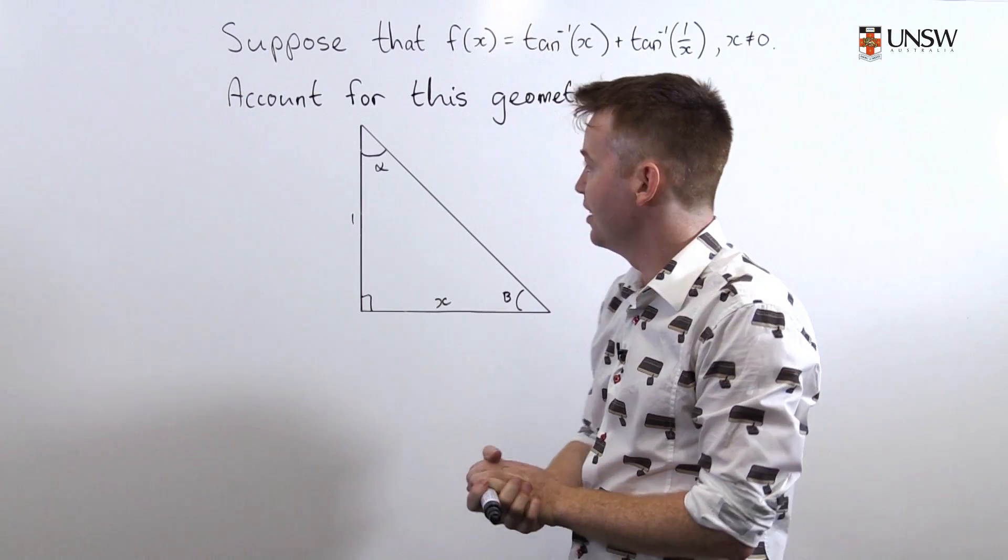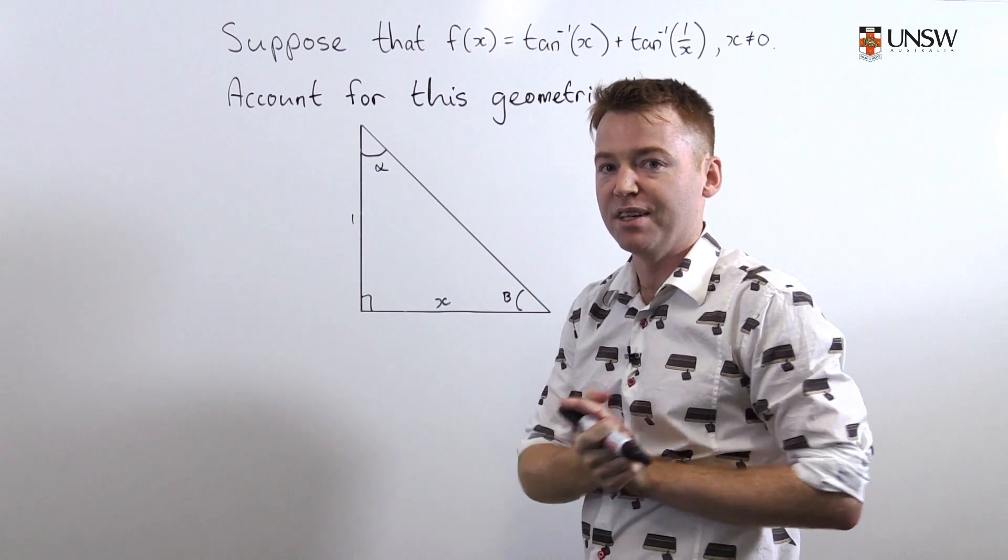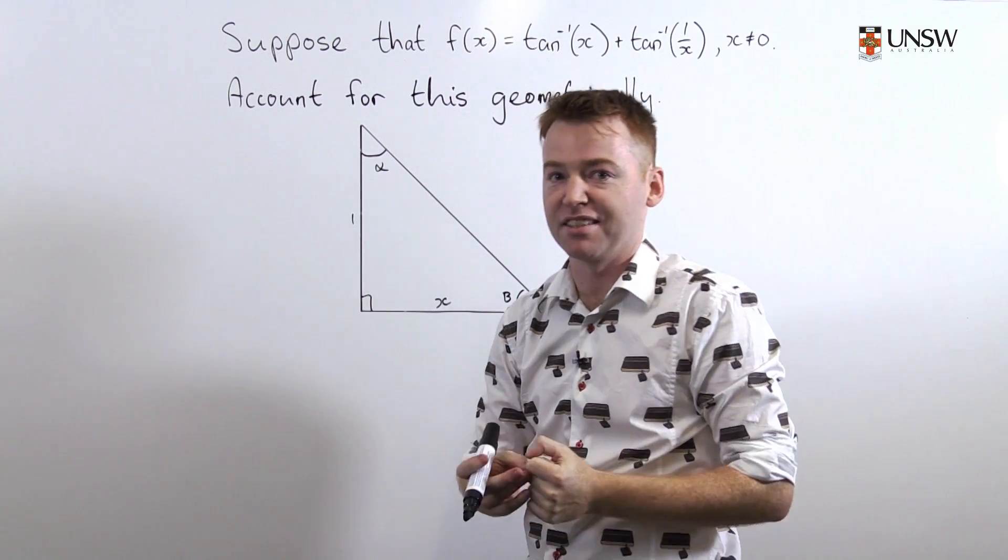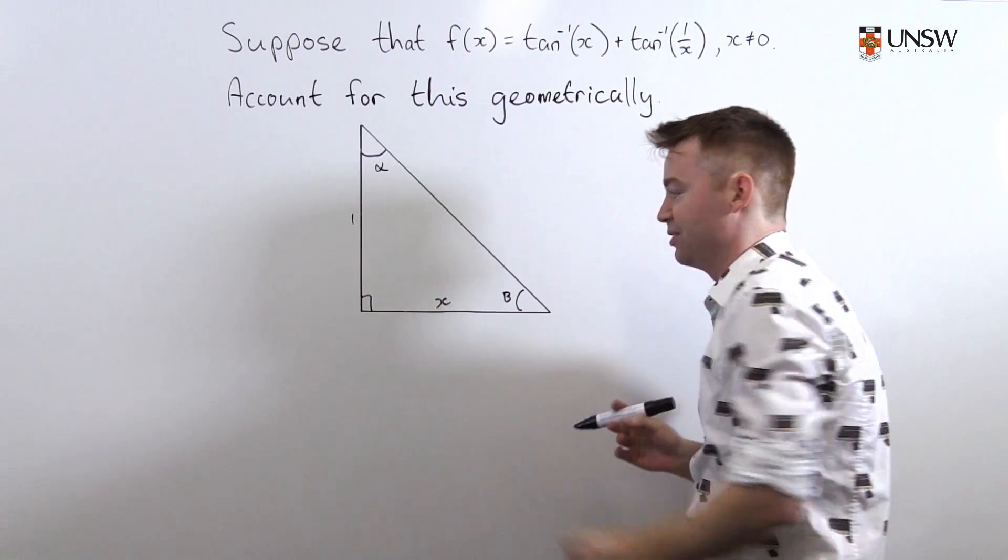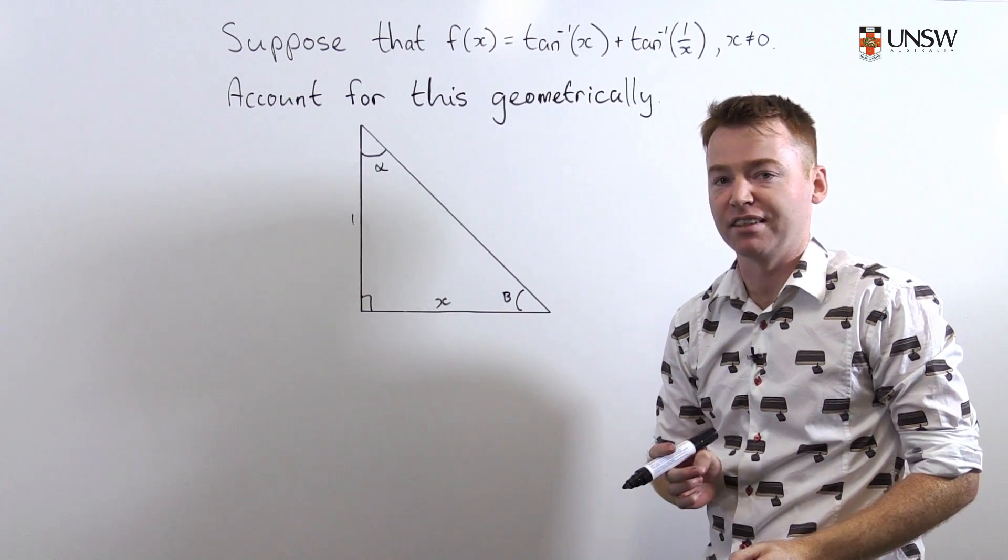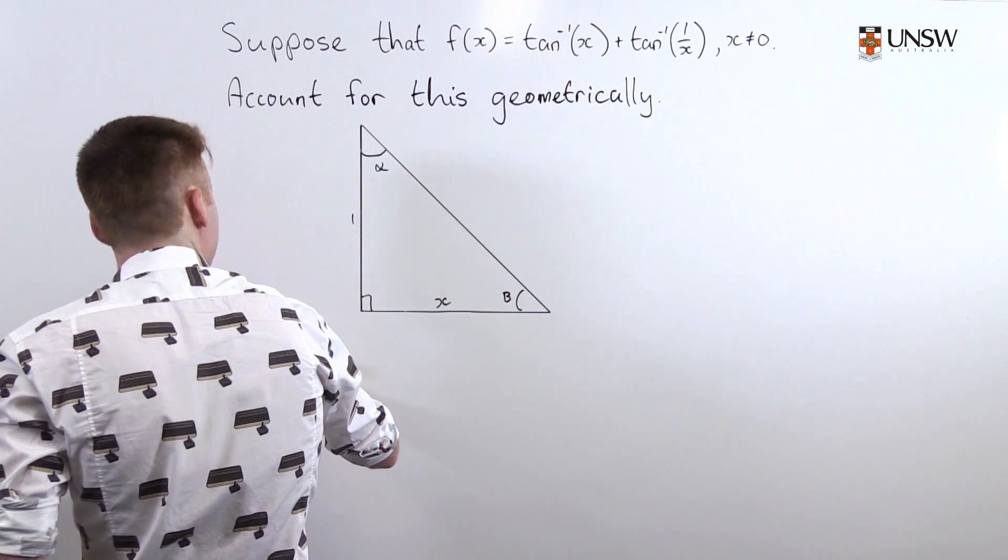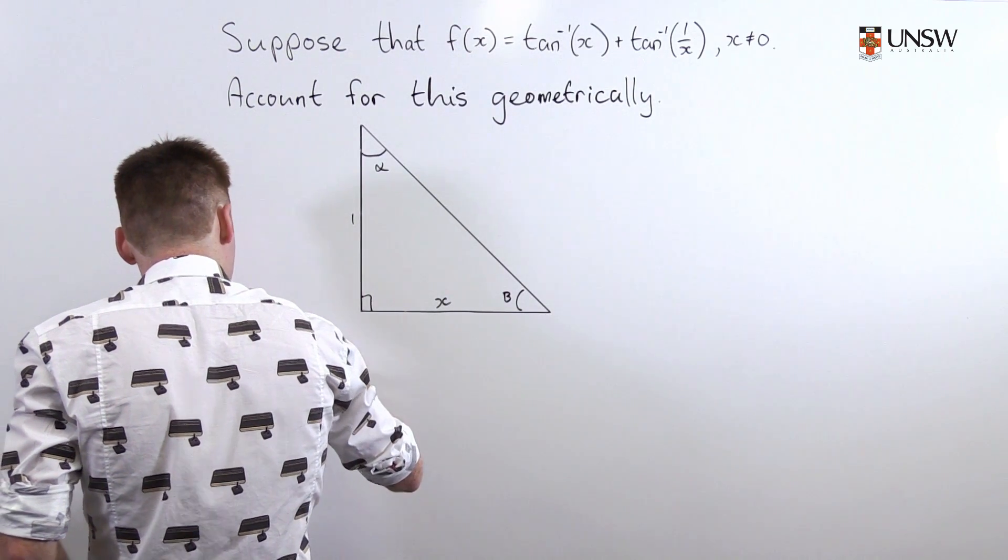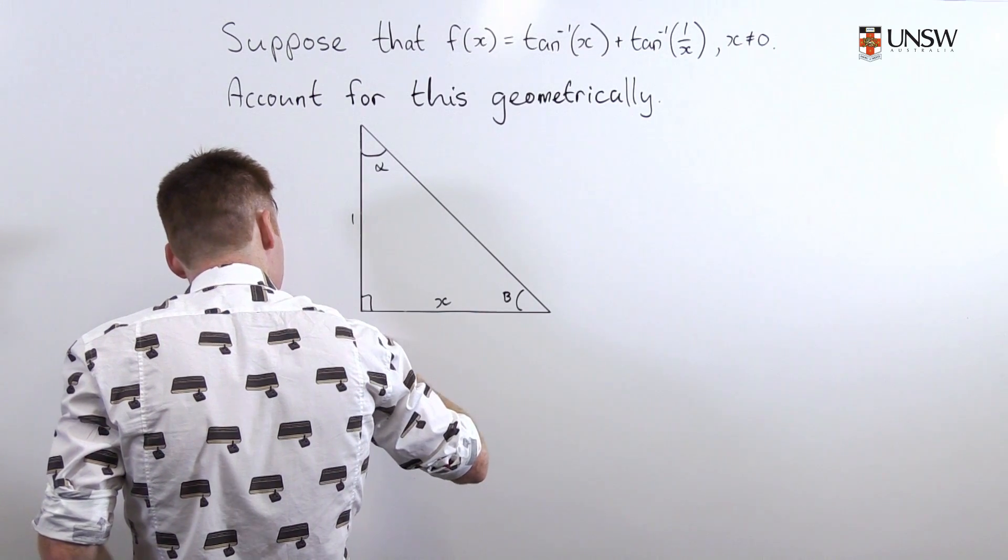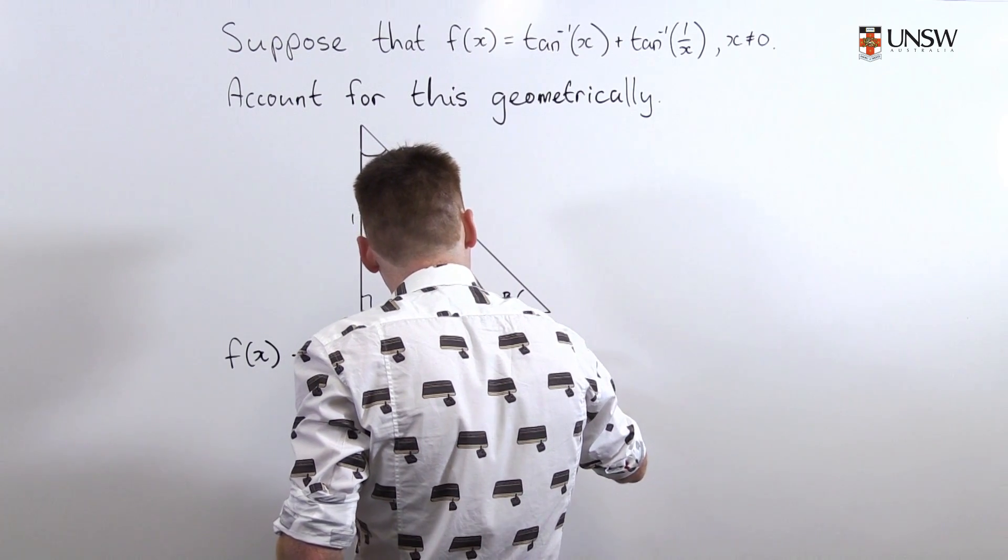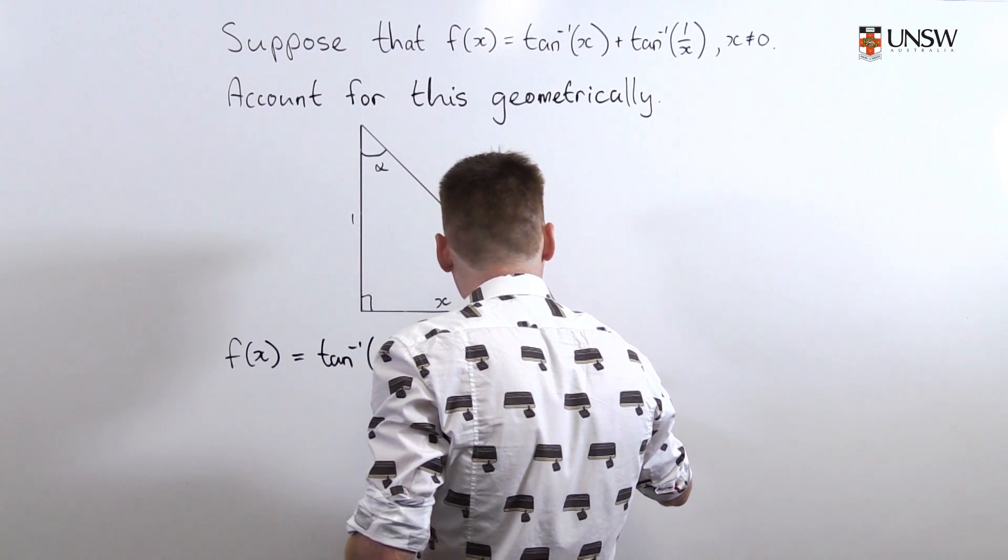Okay, so now we're going to account for this phenomenon geometrically and we'll ignore the negative x-axis side because it doesn't make sense geometrically to have a negative x length.